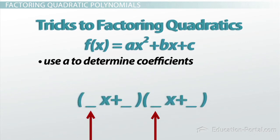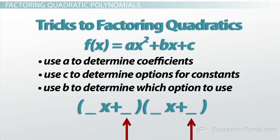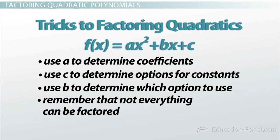So the tricks to factoring quadratics: use a in front of your x squared to determine the coefficients of your factored terms. You're going to use c to determine the options for your constants, and you're going to use b to determine which of those options to use. Now obviously it can get very complicated very quickly. So you should remember that not everything can be factored, and factoring takes a lot of practice.